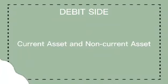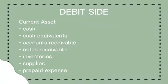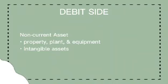Pag-usapan naman natin ang debit side. Meron tayong tinatawag na current asset and non-current asset. Sa current asset, ay nakapaloob dito ang cash, cash equivalents, accounts receivable, notes receivable, inventories, supplies, and prepaid expense. Sa non-current asset naman, ay property, plant, and equipment, then intangible assets.